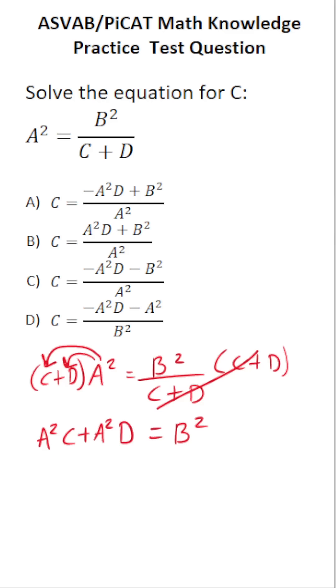All right, again, we're trying to get C by itself. So the next thing I'm going to do is move A squared times D to the other side of the equation via subtraction. In doing so, this crosses out here, leaving us with A squared times C equals negative A squared times D plus B squared.